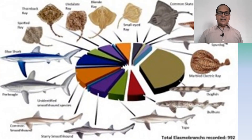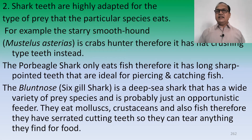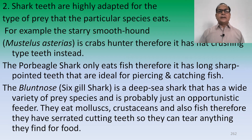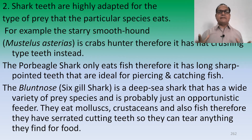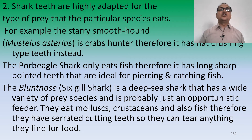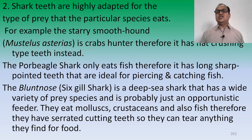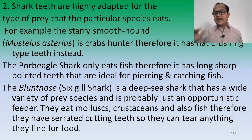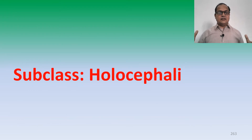Shark teeth are highly adapted for the type of prey that each particular species eats. For example, the starry smooth-hound shark is a carnivore and therefore has crushing-type teeth. The porbeagle shark only eats fish, so it has long sharp pointed teeth ideal for piercing and catching prey. The bluntnose sixgill shark is a deep-sea opportunistic feeder that eats mollusks, crustaceans, and fish, and therefore has serrated cutting teeth to tear anything it finds.